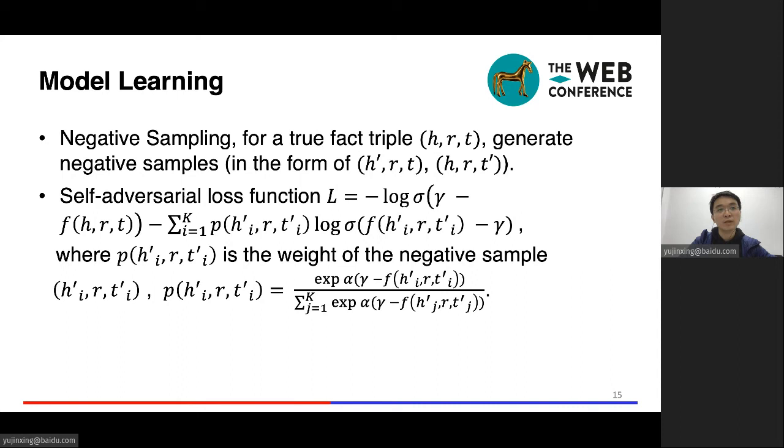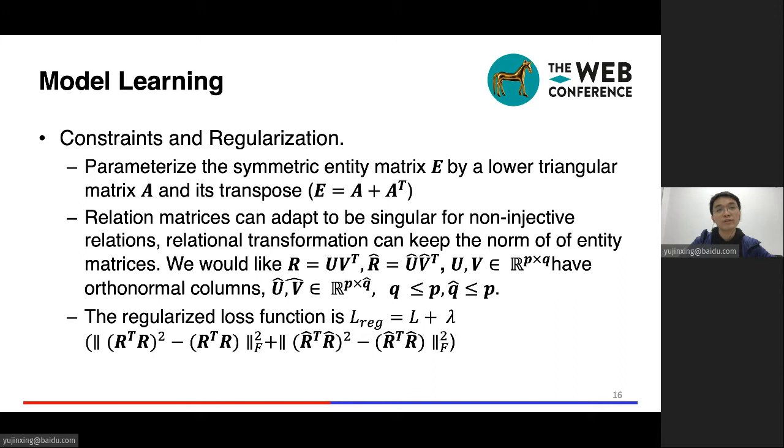Our model learning follows previous work. We do negative sampling and use the self-adversarial loss function to learn the model parameters. We have constraints and regularization for the embedding matrix. We constrain the entity matrix to be symmetric, so we parameterize it by A plus A transpose, where A is a lower triangular matrix. For a relation matrix, we hope it can adapt to be singular for non-injective relations and it can keep the norm of the entity matrix in transformation. So we design the following regularization term to let the singular values to be one or zero.